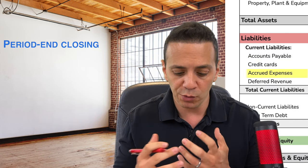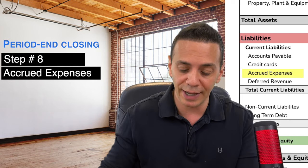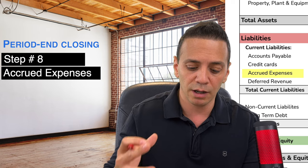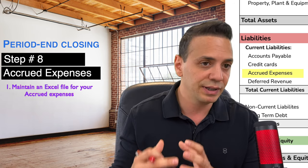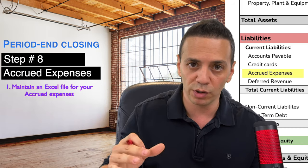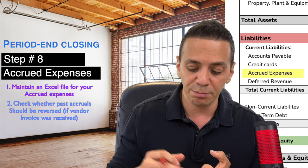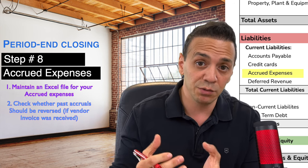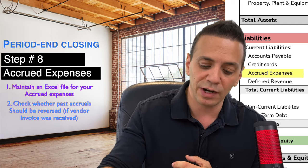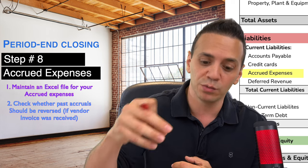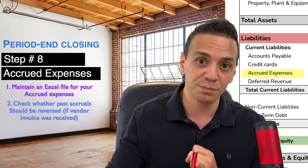Number eight is accrued expenses — a liability representing expenses incurred but not yet paid to vendors. Maybe you incurred an expense today but haven't been invoiced yet, so it's not accounts payable, but you recognize a liability by debiting the expense and crediting the liability account. Maintain an Excel file with all vendors you have accruals for, review it monthly for reasonableness, and check for reversals — if you received the vendor invoice and booked it to AP, reverse it out of accrued expenses so it doesn't live in two places.